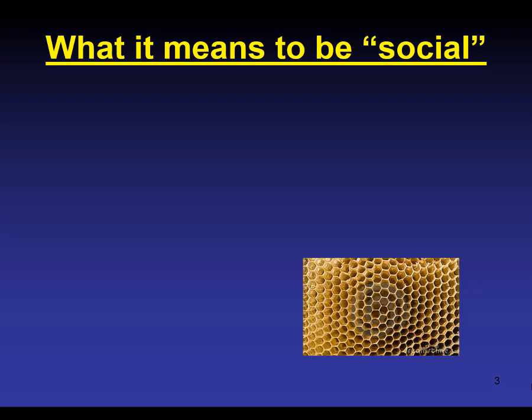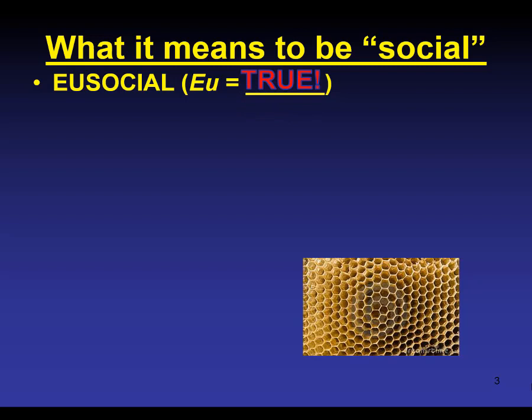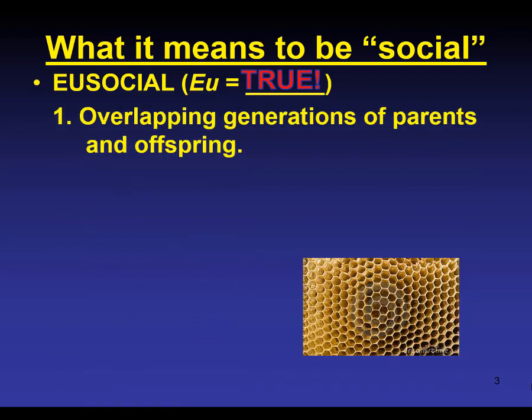In terms of what it means to be social, there are actually three requirements for being considered social. One term we're going to be talking about is eusocial insects — these are truly social insects. You might remember from biology class, eukaryotic organisms are organisms that have cells with a true nucleus. That word 'eu' means true, so let's cover the three requirements for being social.